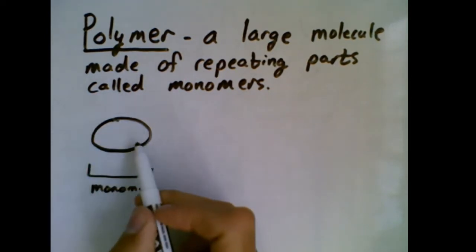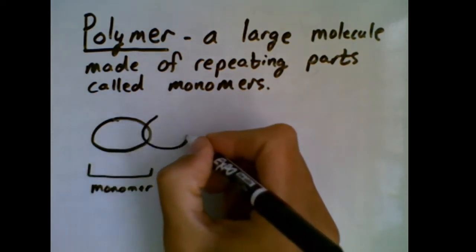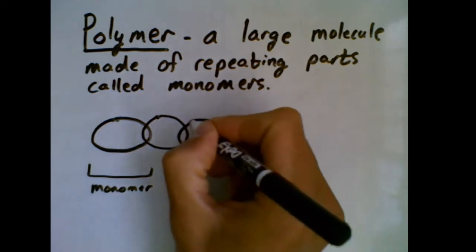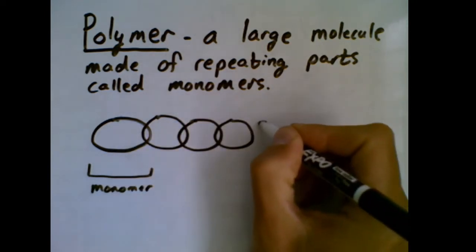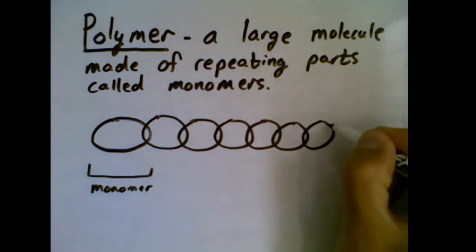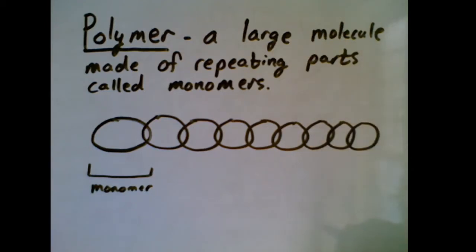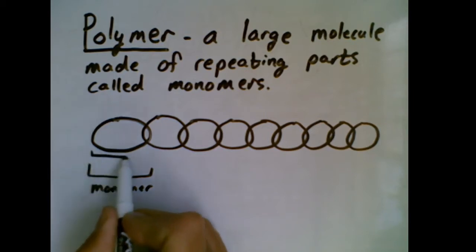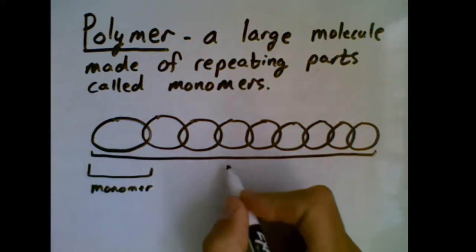But a chain is not just a monomer, it is a collection of them connected together. A polymer is not just a single monomer, it is sometimes millions upon billions of monomers all connected in a larger structure. So this entire thing would be our polymer.